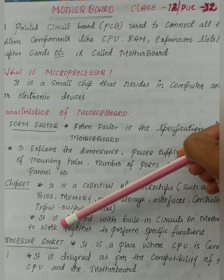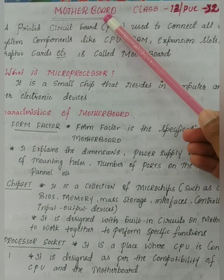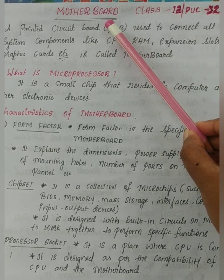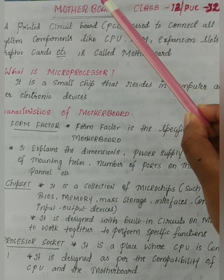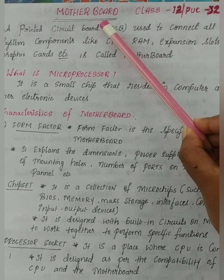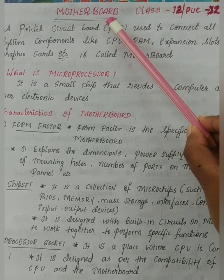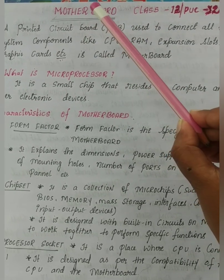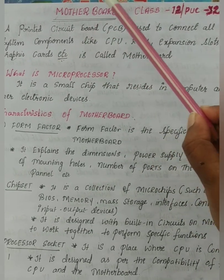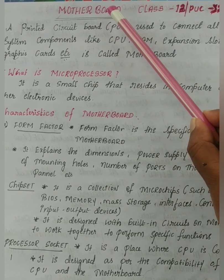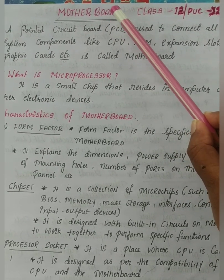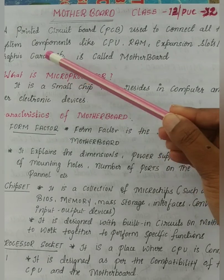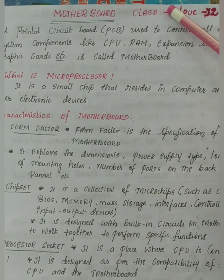So what do you mean by motherboard? A motherboard is a main circuit board. Without a motherboard, no function can happen in the computer. It is called the main circuit board because it connects the different components of the computer and makes communication between them. It acts as a platform to combine or connect different components like CPU, RAM, expansion slots, and graphic cards, and performs some specific functions.